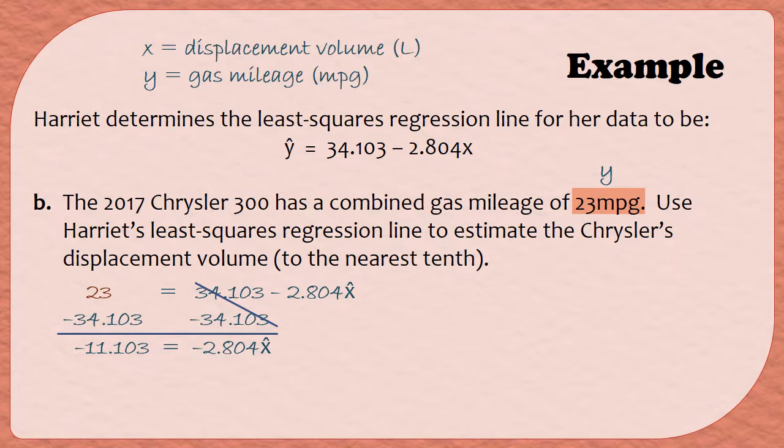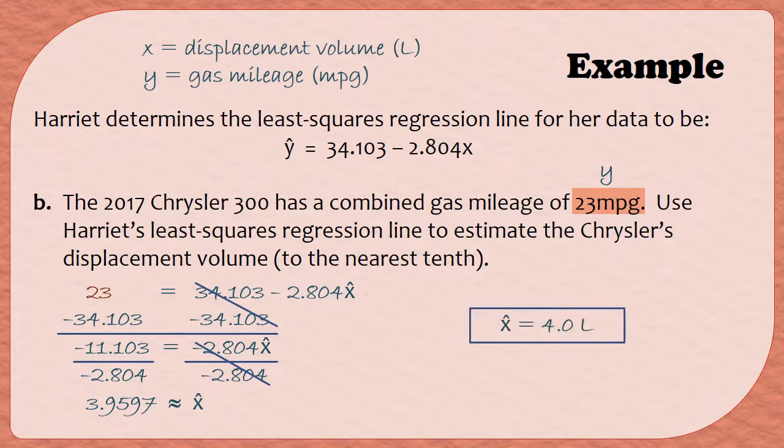To finish off, because the -2.804 is being multiplied to the x̂, in order to undo the multiplication, we're going to divide. So I'm going to divide both sides by -2.804. This is because on the right-hand side now, the -2.804s are going to cancel out and give me 1, so I just end up with 1x̂ on the right. And on the left-hand side, I ended up getting 3.9597 when I did the division. So in this problem, we were told to round our answer to the nearest tenth. So the first 9 is in the tenths place, and because there's a 5 just to the right of it, it means it's going to round up. So 3.9597 is going to round up to 4.0. So x̂ is 4.0 liters. In other words, the Chrysler, which had a gas mileage of 23 miles per gallon, was used to predict that the Chrysler will have a displacement volume of 4 liters.